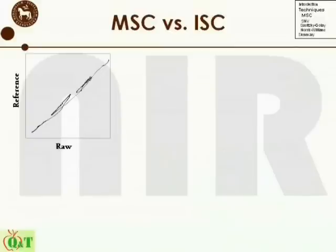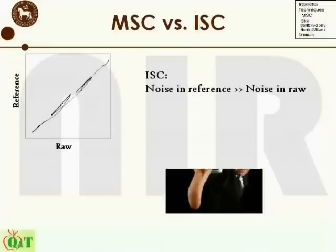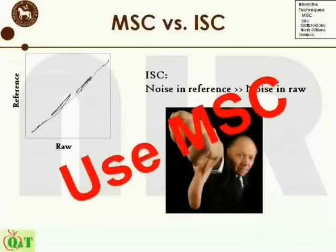Opposed to this, ISC assumes that the error in the raw spectrum is much lower than in the reference. This is never the case if the reference is calculated as the average of a set of spectra similar to the raw spectra, and can only be the case if the reference spectrum was recorded using poorer settings in the instrument or a different instrument altogether. As this is seldom the case, we would not recommend using the inverse version of MSC.